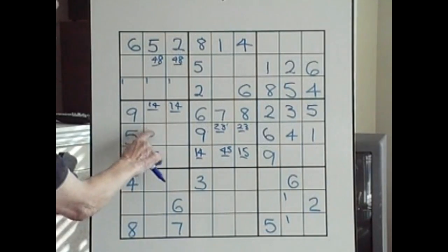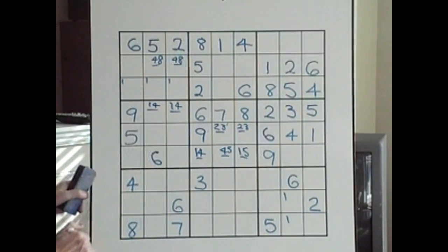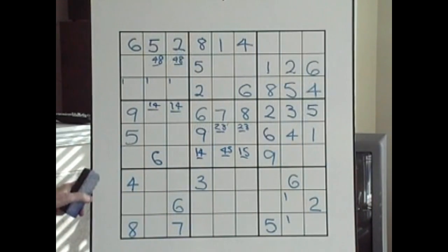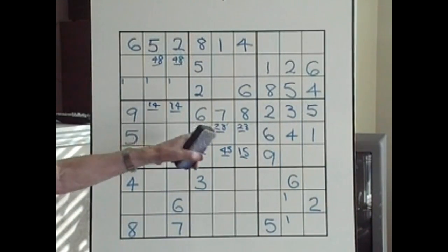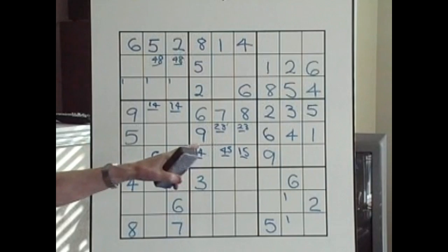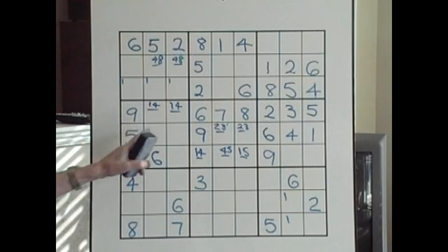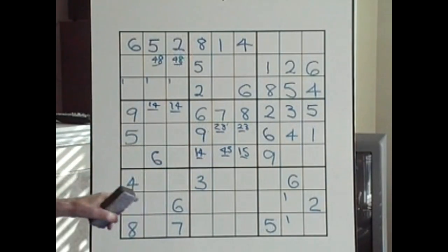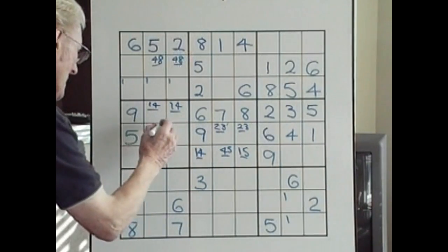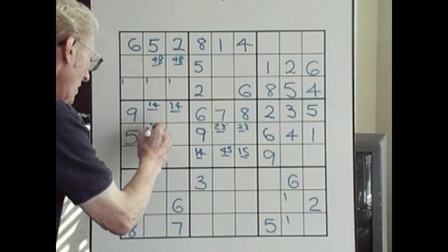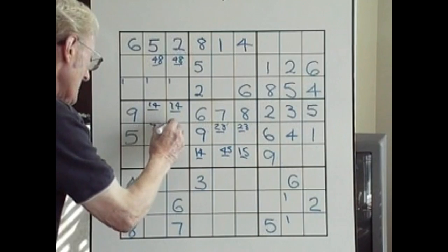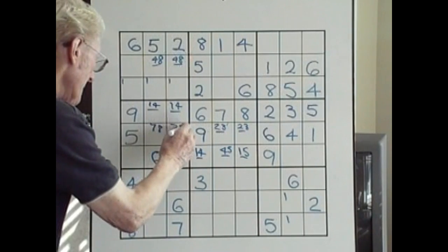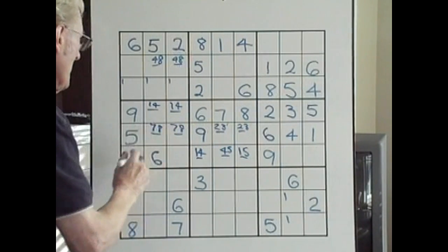So we can work out what's missing in here. One, two, three, four, five, six, seven, eight is missing. Seven, eight, seven, eight.